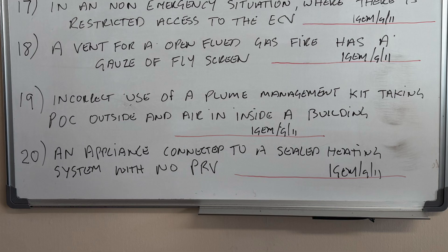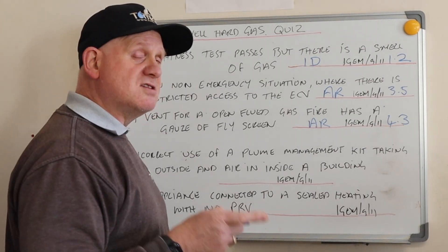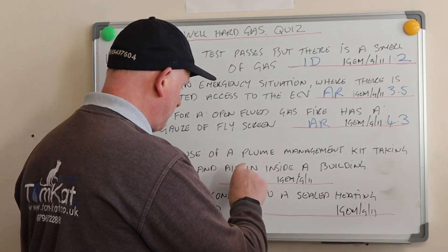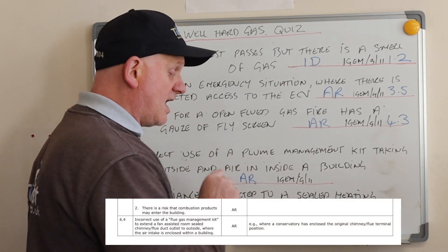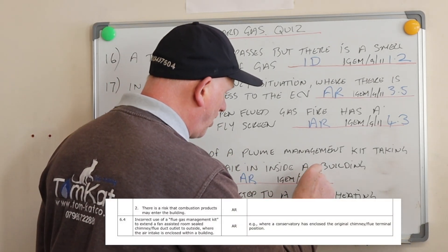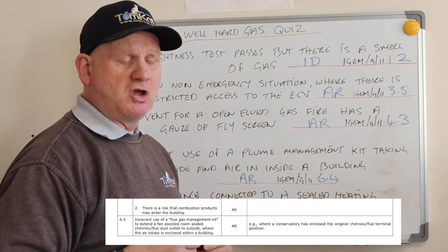Question nineteen: incorrect use of a plume management kit — taking products of combustion outside and air intake inside a building. Hopefully you didn't say it was ID; this would be 'at risk,' and it's at section 6.4 in IGEM G11.